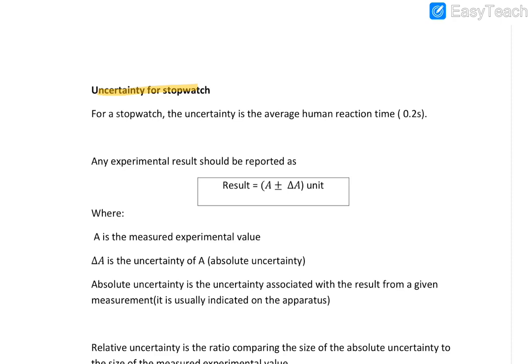If you look at any digital equipment, for example a mass balance, you'll see when there's nothing being measured you might see something like this on the screen. When you're recording your value, you'll record to the smallest reading that can be taken from the mass balance—in this case 0.001 grams. For a mass balance or any other digital equipment, the uncertainty would be the smallest reading that can be taken with that equipment. But for a stopwatch it's different.